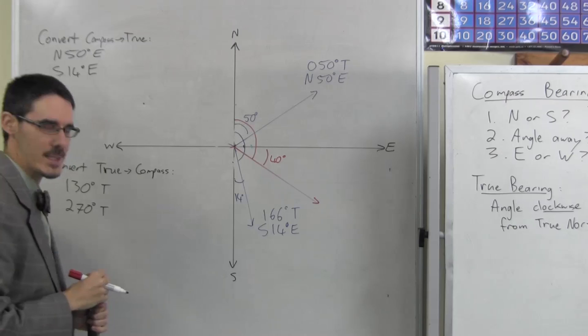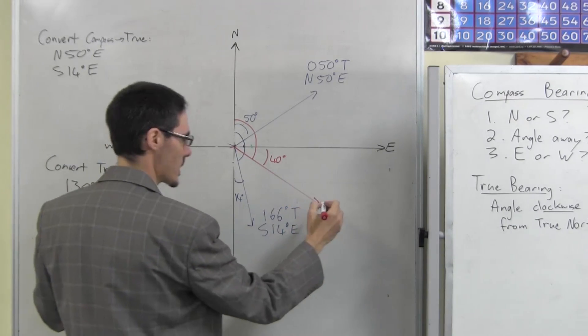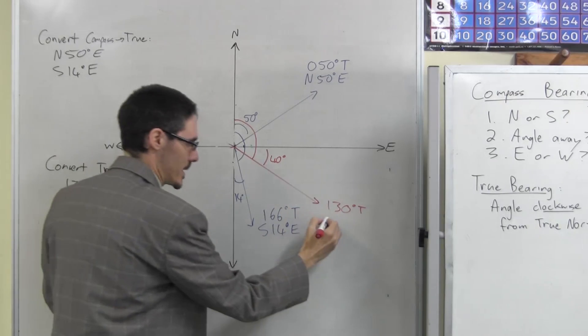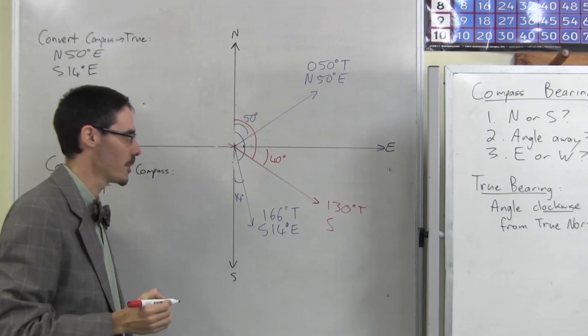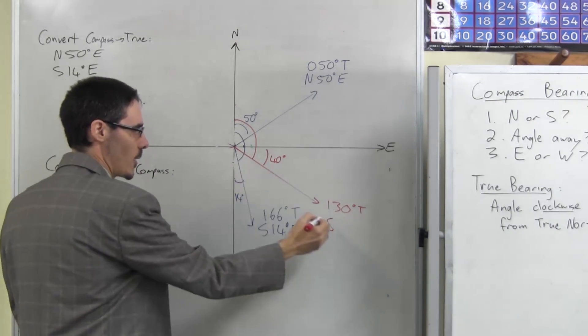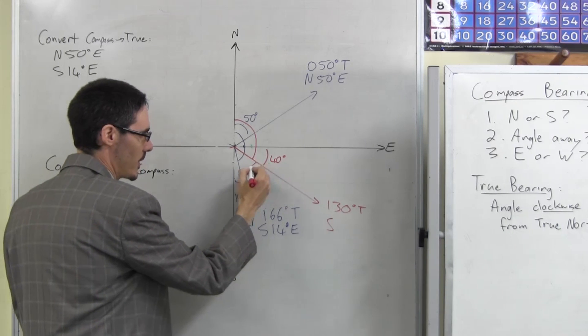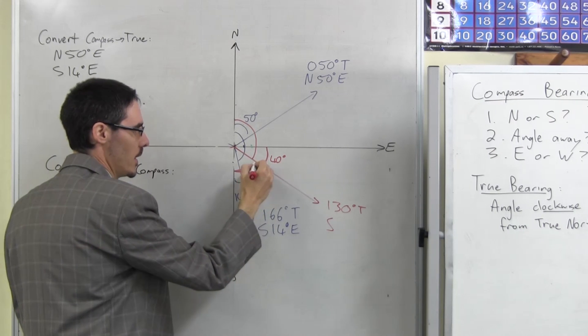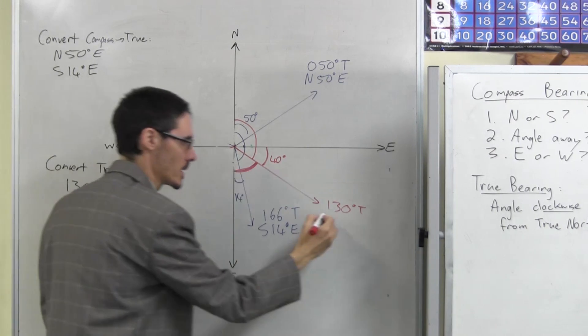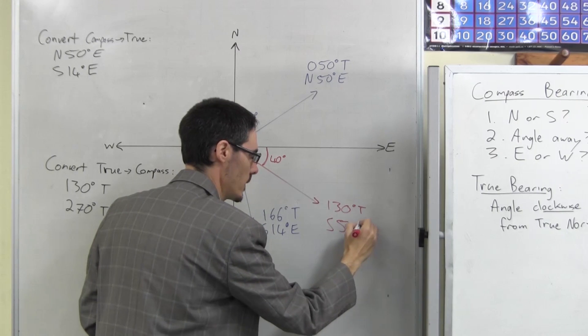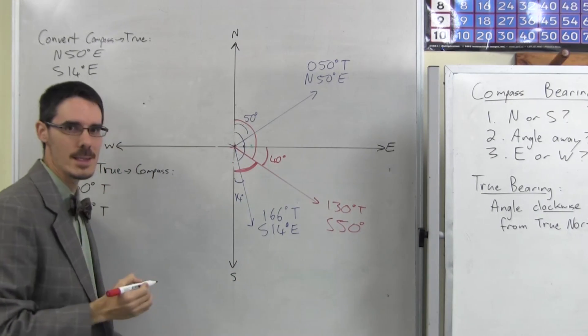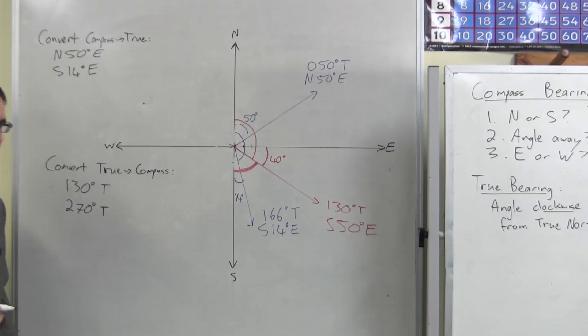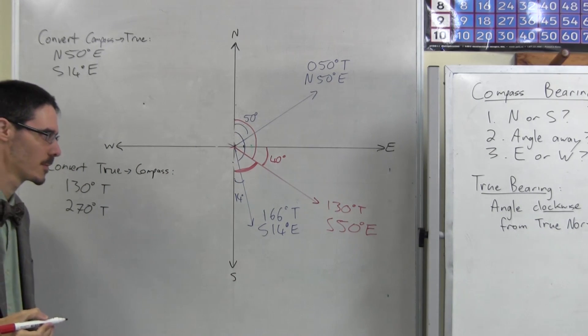First, is it north or south? It's south. I should write this in 130 degrees true. It's clearly south rather than north. What's the angle away from south? We want this angle here. Well, if that's 40, then there's 50 left to get to 90. 50 degrees. And is it east or west? It's east. Easy enough?